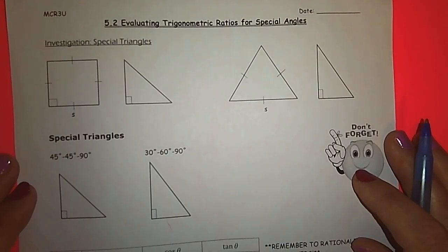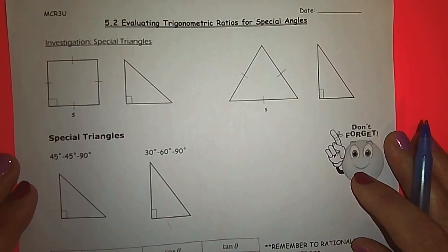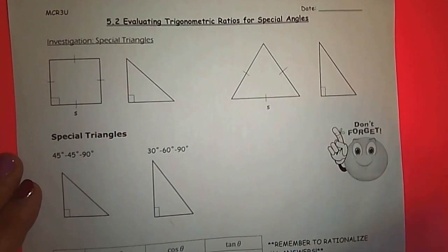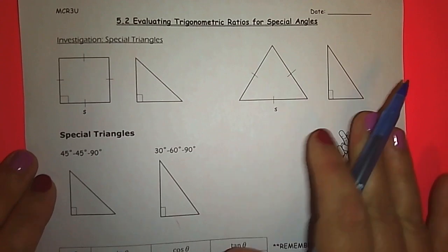Hello everyone. Today we are going to look at trigonometric ratios for special angles. 30 degree, 45 degree, and 60 degree are considered special angles and we are going to look at exact ratios for those angles. Let's start with an investigation.